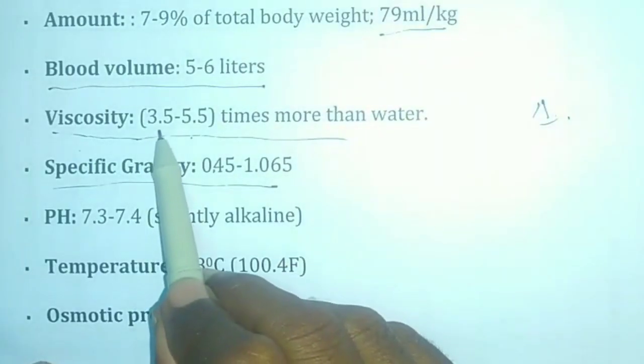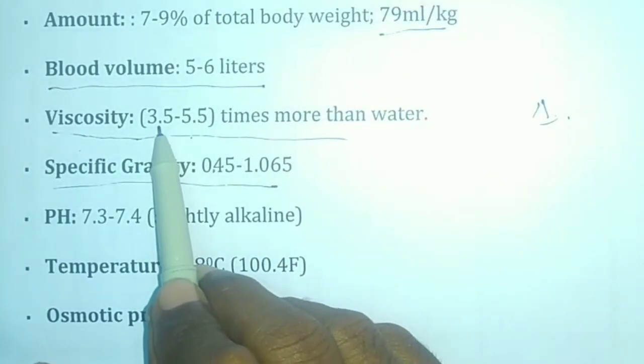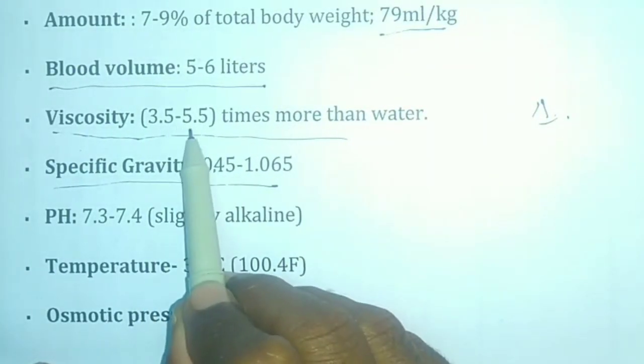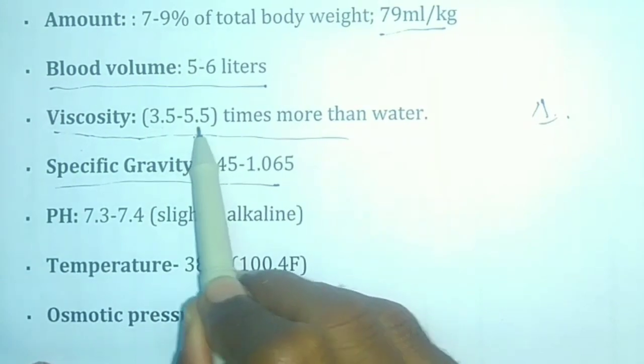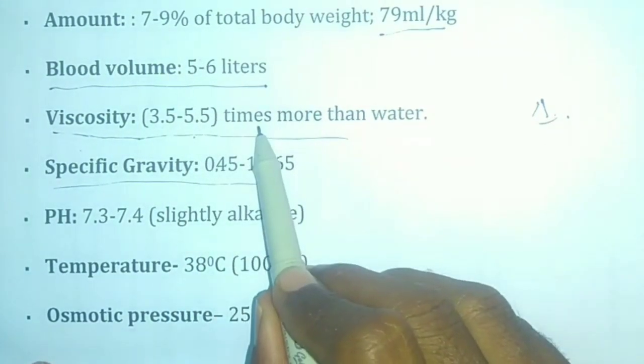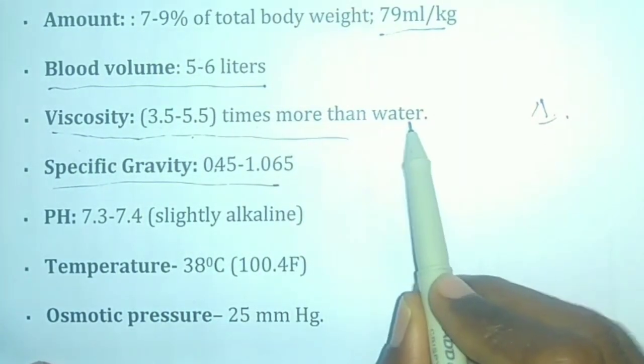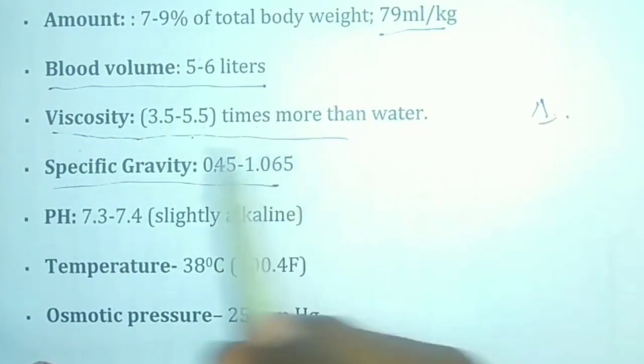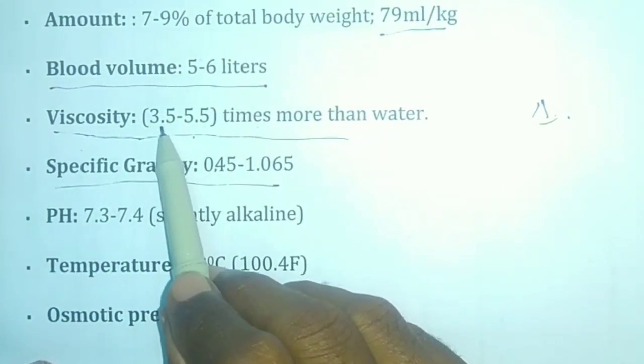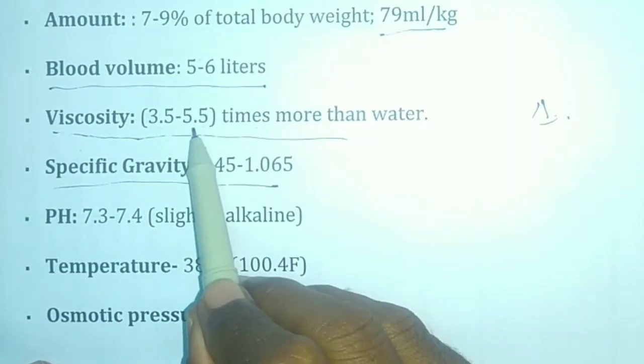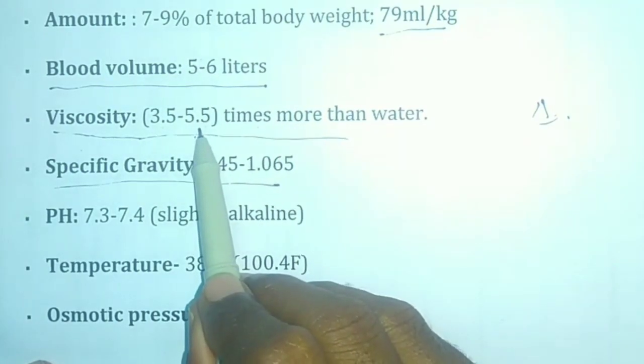The viscosity of blood is 3.5 to 5.5 times more than that of water.